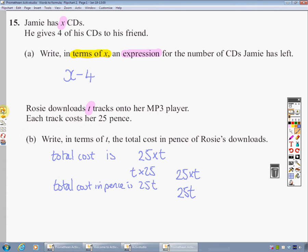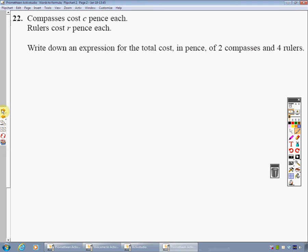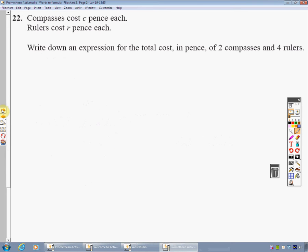Okay, let's look at the next question. It's very similar to the one we've just done so if you'd like to press pause and have a go yourselves, I'll come back and help you. Press pause now. Okay, welcome back. Here we've got some information given to us. Compasses cost c pence. Rulers cost r pence. And again, we've quite nicely got which one's which there. And it says write down an expression for the total cost in pence of two compasses and four rulers.